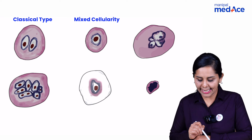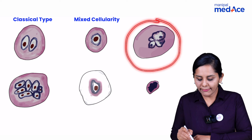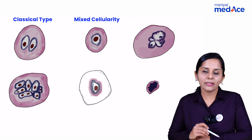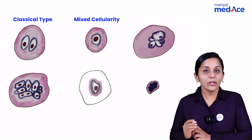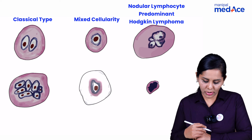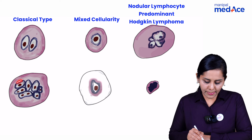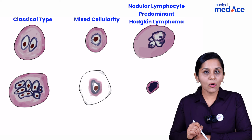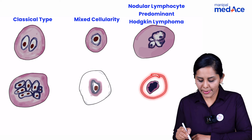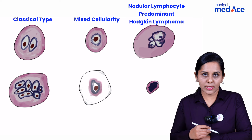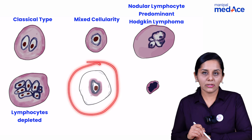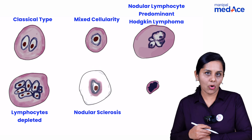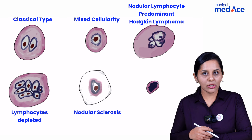The mononuclear version is called the Hodgkin cell. The LnH lymphohistiocytic type, like a popcorn nucleus, is typically seen in nodular lymphocyte predominant Hodgkin lymphoma. The multiple nucleated pleomorphic type as well as the mummified form is usually associated with lymphocyte depleted form, and the lacunar variant of Reed-Sternberg cell is typical of nodular sclerosis type of Hodgkin lymphoma.